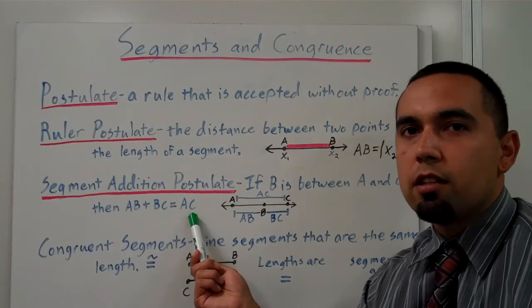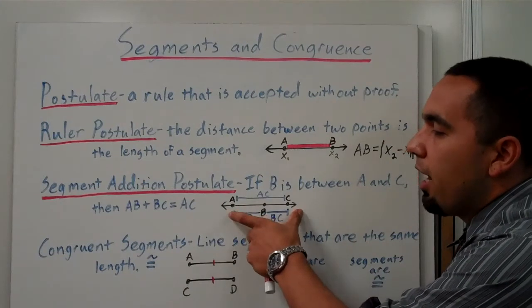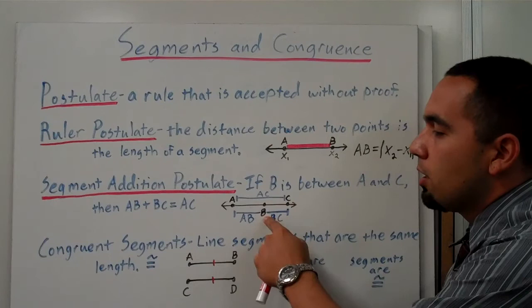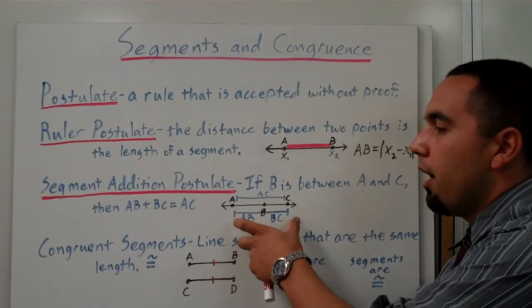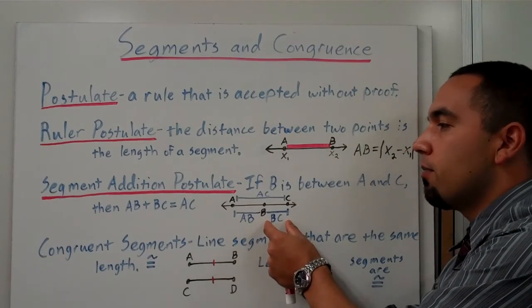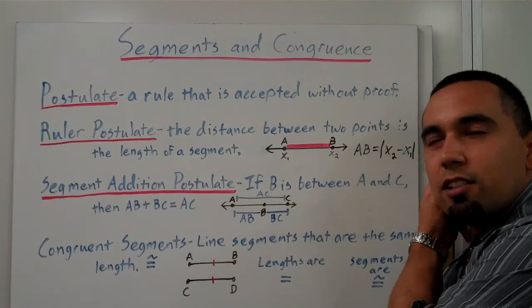So let's take a look. If we look at this line, we have a line with points A, B, and C. B is between, just like it says, between A and C. And if we added the length AB to the length BC, we would get the length of AC. So you can see how postulate is just kind of something real simple.